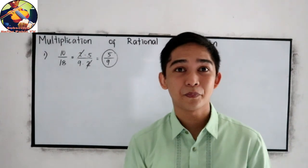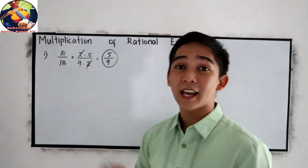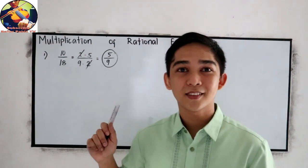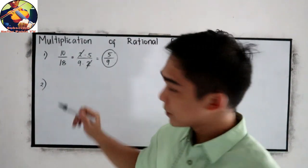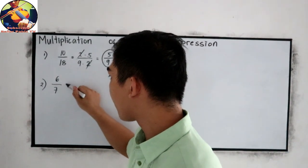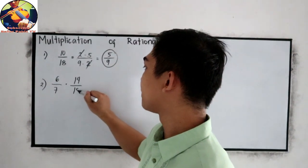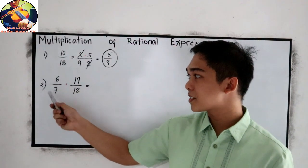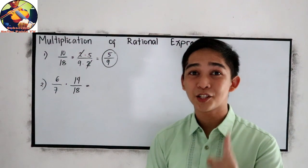This is now the simplest form. And now let's try that cancellation technique in our Multiplication of Rational Expressions. Let's say we have 6 over 7 times 14 over 18. Let us use the cancellation method.